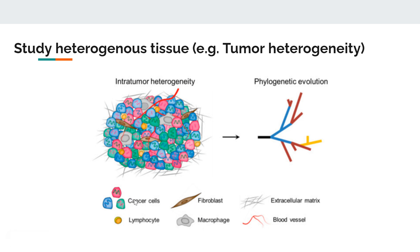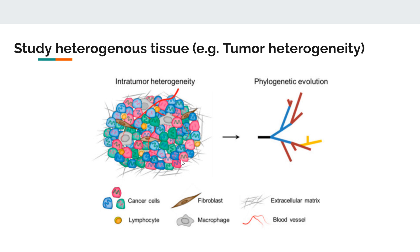If you take this tumor and do bulk RNA sequencing, the expression profile you get is the average of all four cell types. But in reality, the genes expressed in cancer cells will be different from fibroblasts, and different from lymphocytes and macrophages. With single cell technology, we can separate them and study which genes are expressed in fibroblasts alone, which in cancer cells, and so on. Single cell technology is widely used in cancer biology for this application.